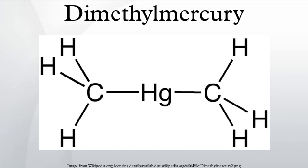Dimethylmercury (Hg(CH₃)₂) is an organomercury compound. This colorless liquid is one of the strongest known neurotoxins. It is described as having a slightly sweet smell, although inhaling enough vapor to detect its odor would be hazardous.